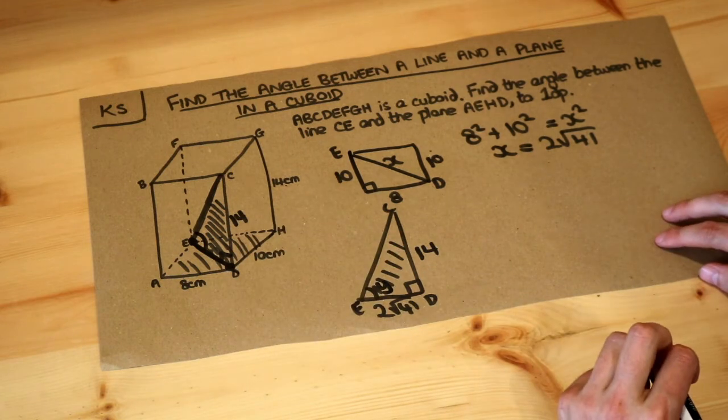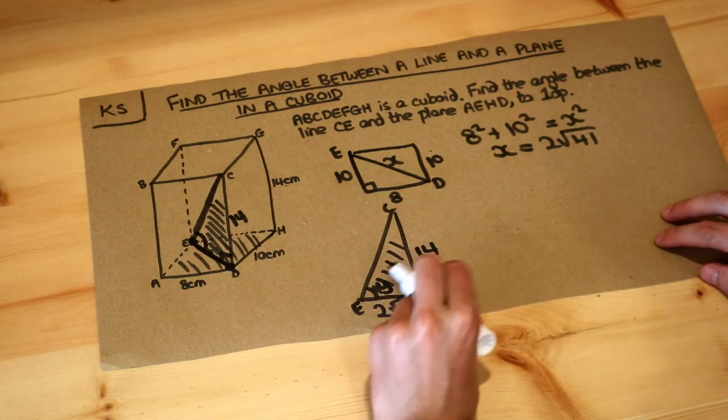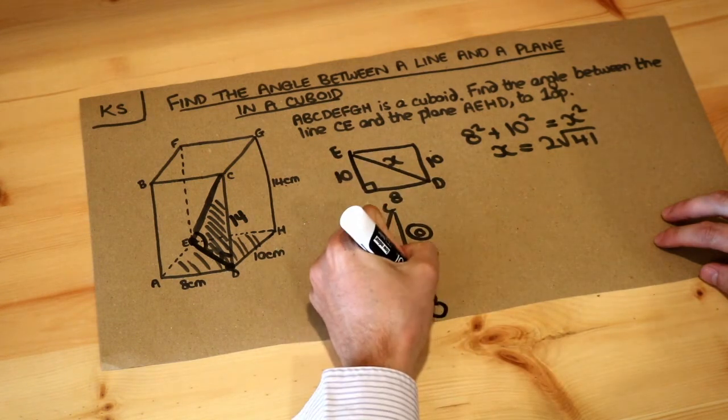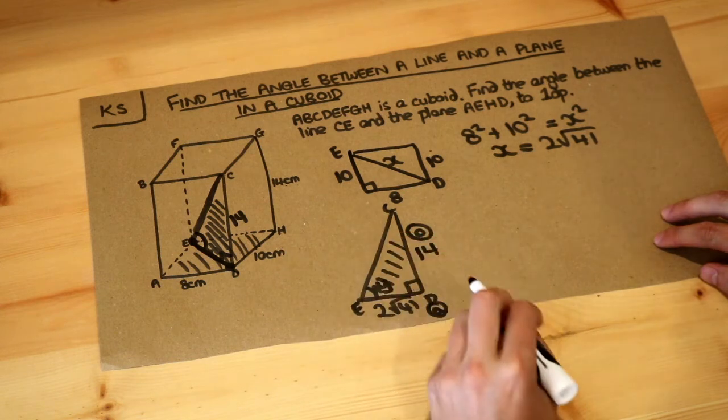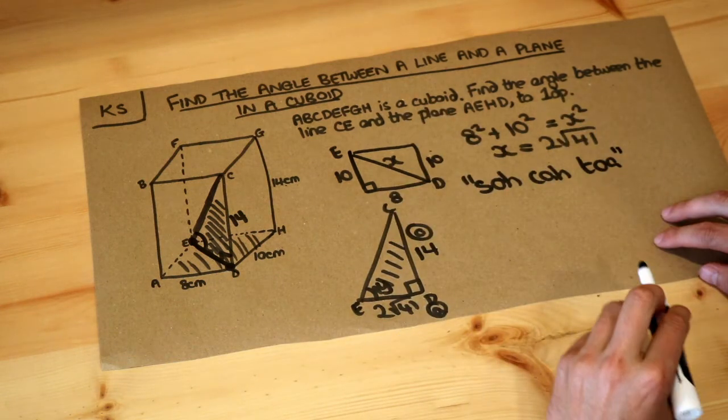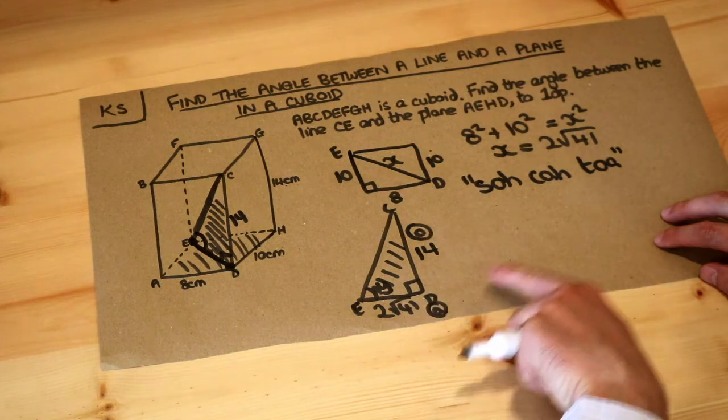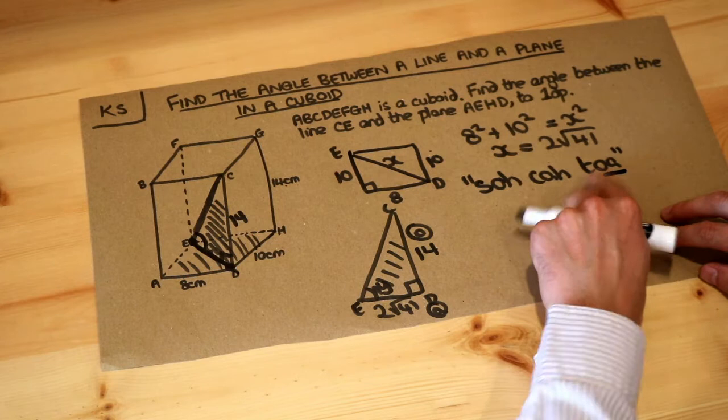So remember how SOHCAHTOA works. We label the sides: this side is opposite the angle so that's the opposite, this side is adjacent to that angle so it's adjacent. And remember SOHCAHTOA, this tells us whether we use sine, cos, or tan depending on what sides we're involving. O and A, the opposite and adjacent, O and A, that's tan.